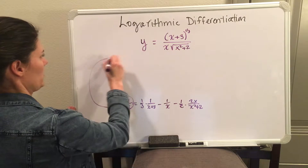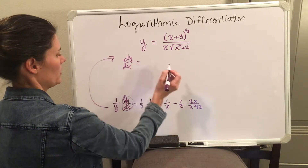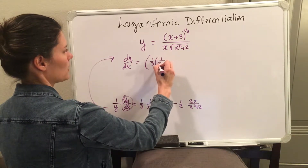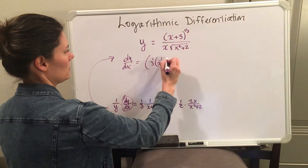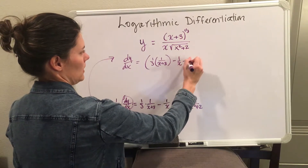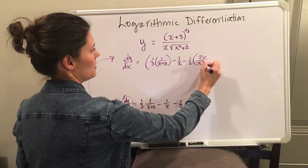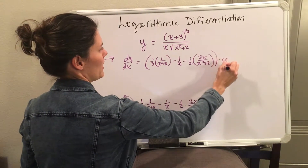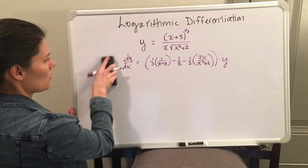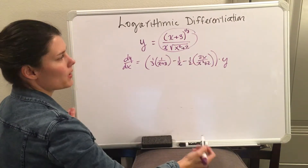Now we want to solve for dy/dx, so I'm going to multiply the y over to the other side. So dy/dx equals one-third times 1 over x plus 3, minus 1 over x, minus one-half times 2x over x squared plus 2, all times y. But you do not want to leave the answer with y in it — you know what y is from the beginning of the problem.